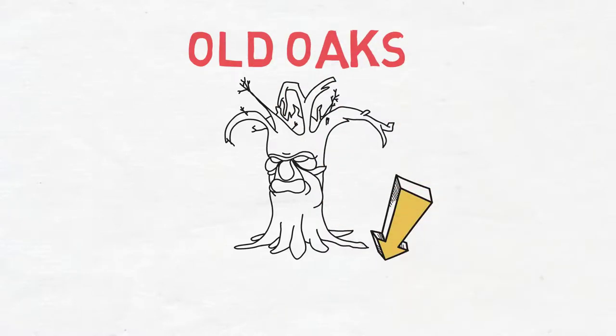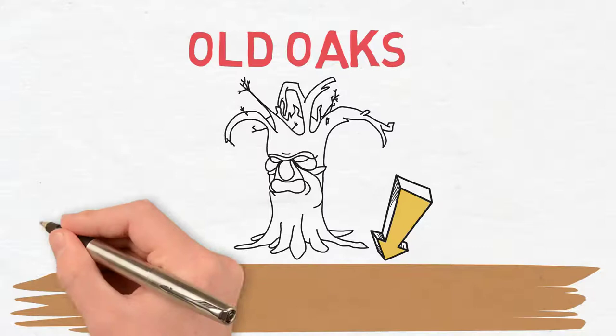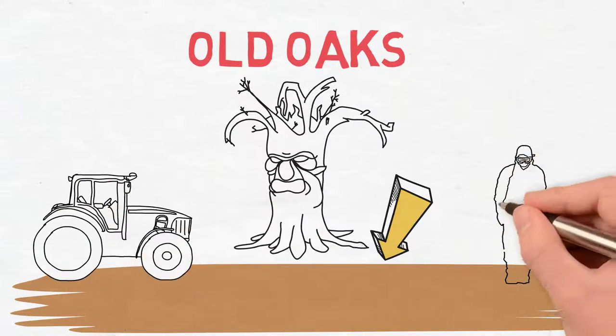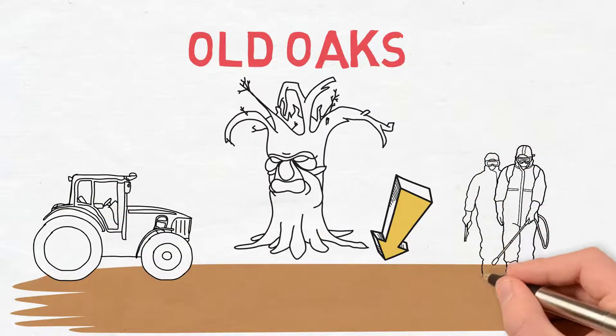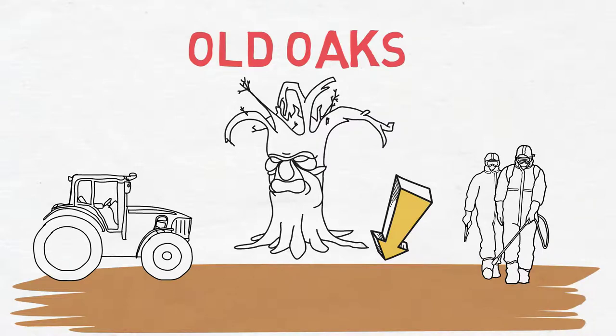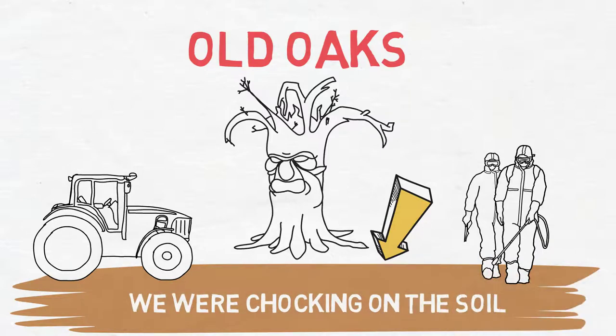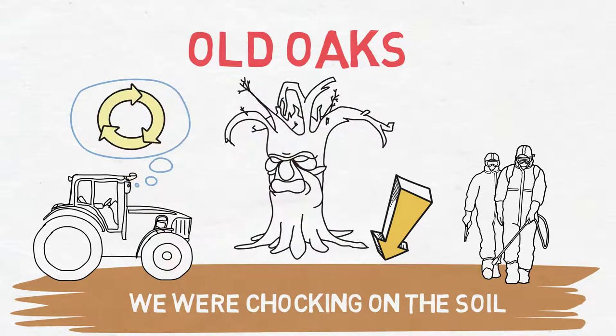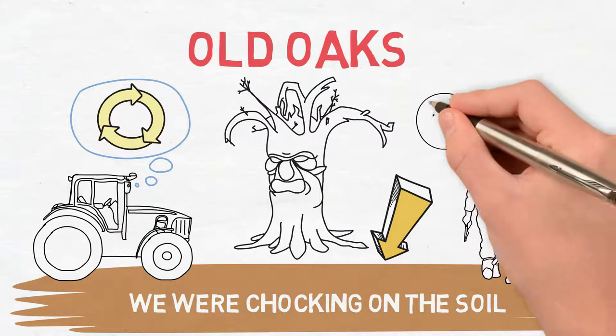Because of what we were doing underneath them—endlessly plowing, endless chemical inputs: fertilizer, pesticides, fungicides, herbicides, everything we were putting on the soil. The repeated plowing right up to their trunks meant these trees were suffering.